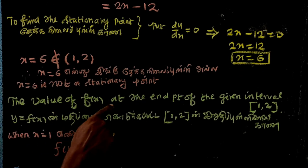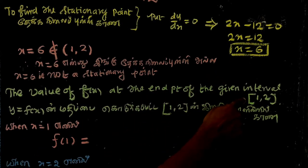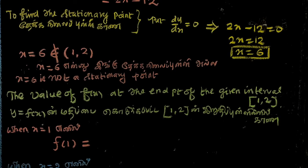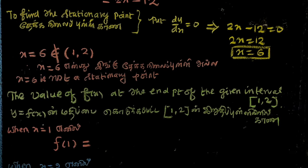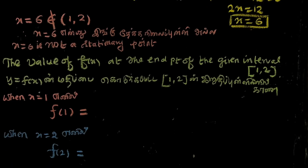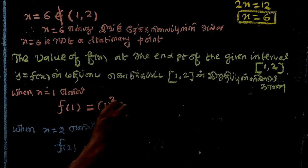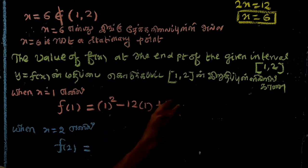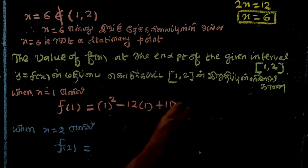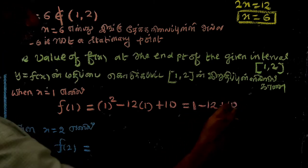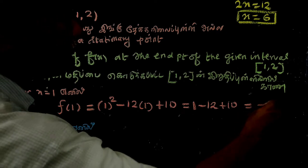We evaluate f of x at the endpoints of the closed interval [1, 2]. When x equals 1, f of 1 equals 1 squared minus 12 into 1 plus 10, which equals 1 minus 12 plus 10, giving minus 1.